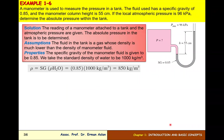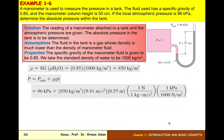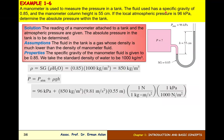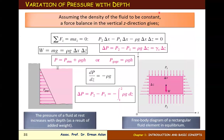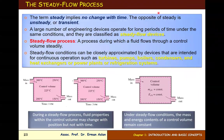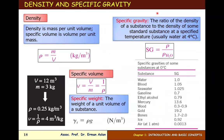Here is an example. A manometer is used to measure the pressure in a tank. The fluid used has a specific gravity of 0.85. Do you know what specific gravity is? Specific gravity is the ratio of the fluid's density to the density of water.